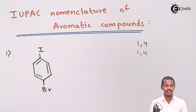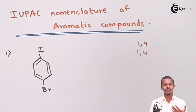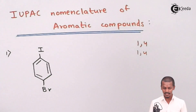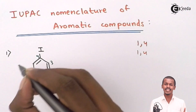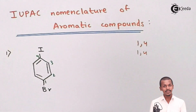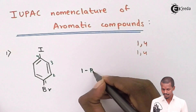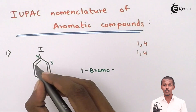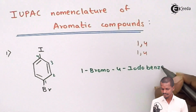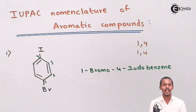From which position should we start numbering? Alphabetical order helps us here. Bromine starts with 'B' and iodine starts with 'I', so according to alphabetical order we give carbon number 1 to the bromine atom. This makes the iodine atom at carbon number 4. Therefore the IUPAC name of this compound is 1-bromo-4-iodobenzene.